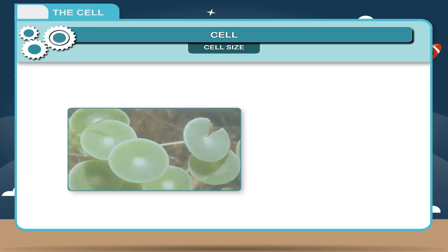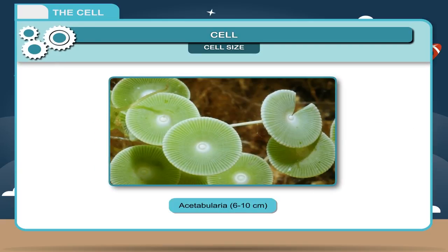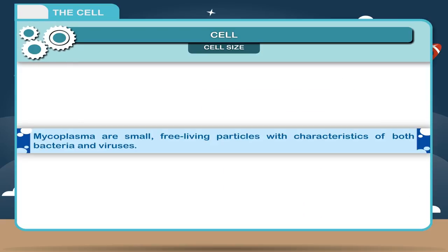In plants, the largest cell is of green algae acetabularia, measures about 6 to 10 centimeters. Mycoplasma are small free-living particles with characteristics of both bacteria and viruses.